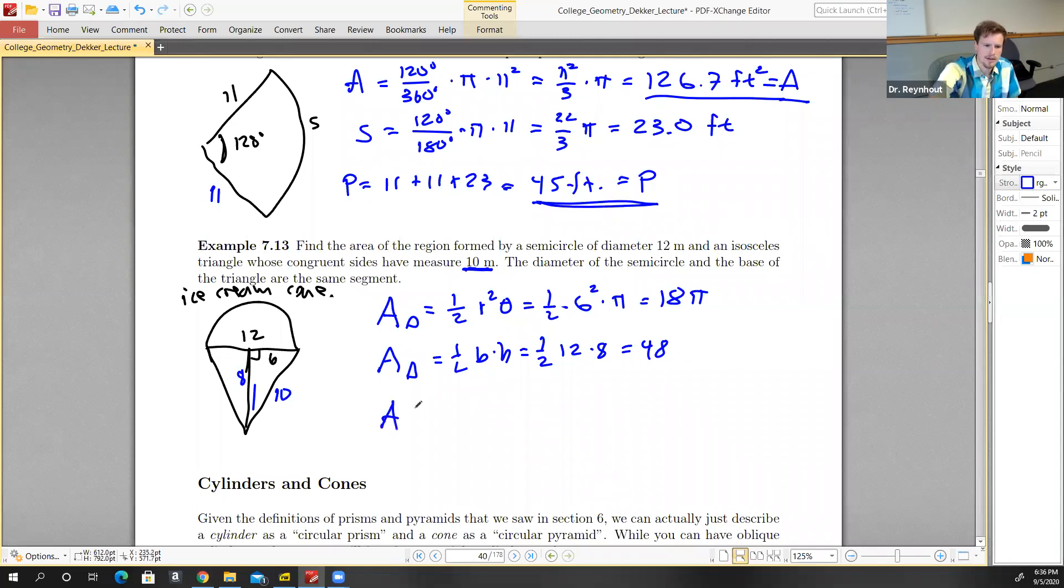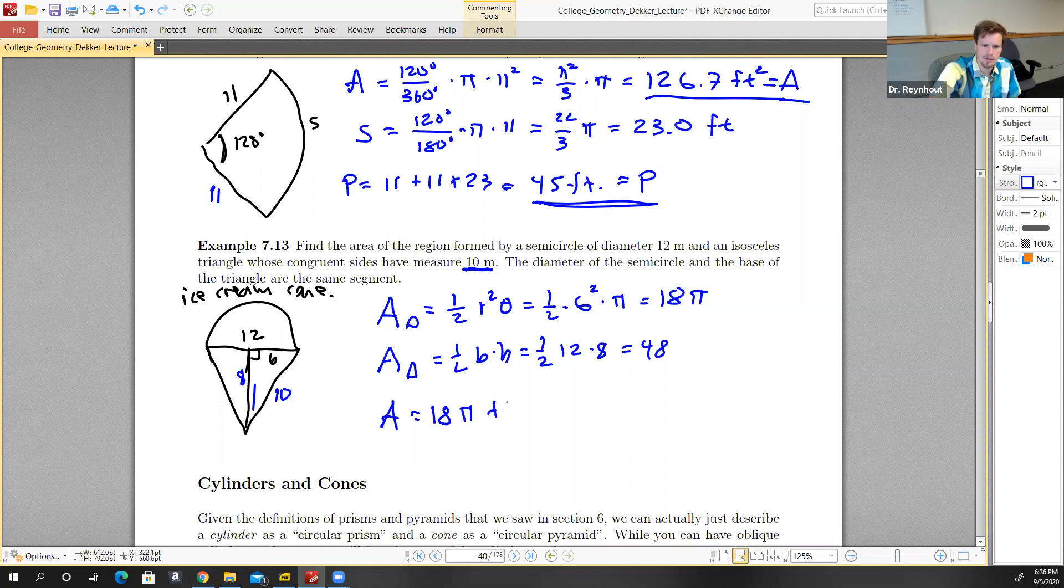So the area overall is equal to 18π plus 48, and we could approximate that as 104.5 square meters. That is the area of our region.